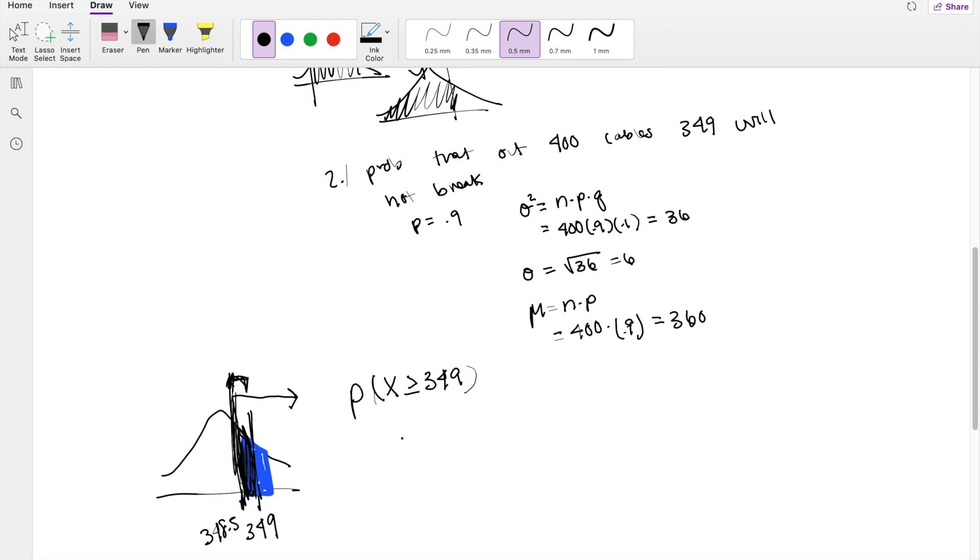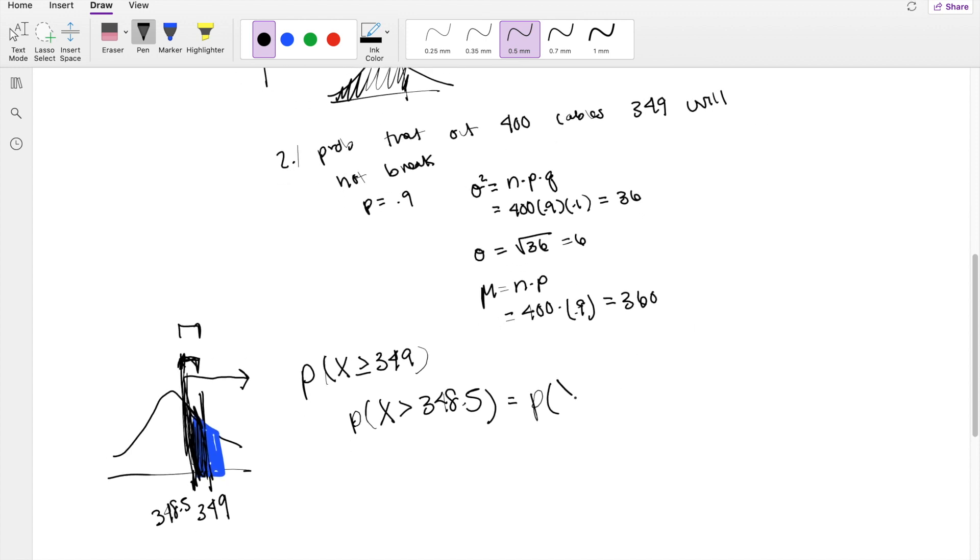So after the continuity correction, this is the probability that x is greater than 348.5 to ensure that we get that little chunk that's missing. So this equals, after we normalize it because this is normally distributed, x minus mean over standard deviation is greater than 348.5 minus mean which is 360 divided by standard deviation which is 6.